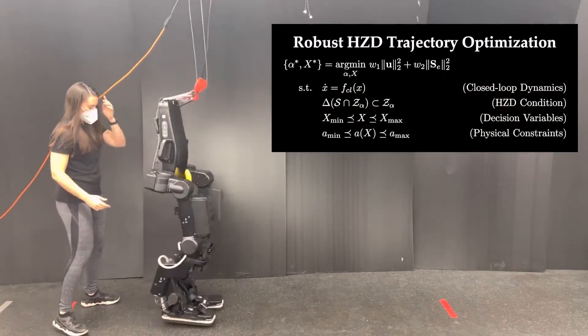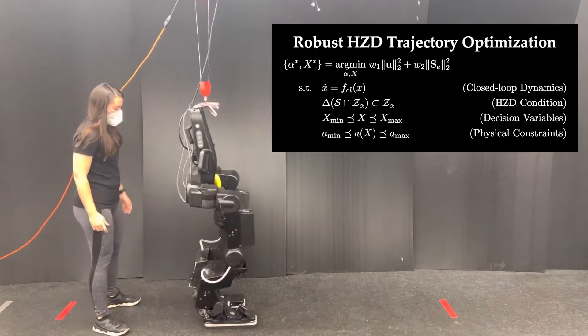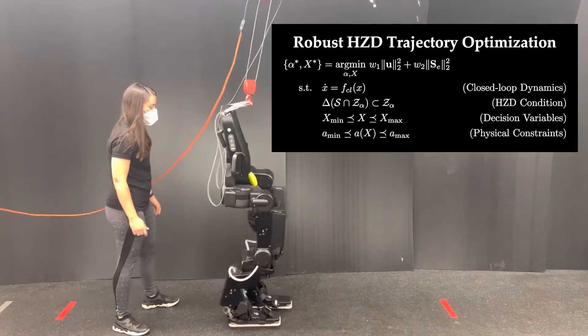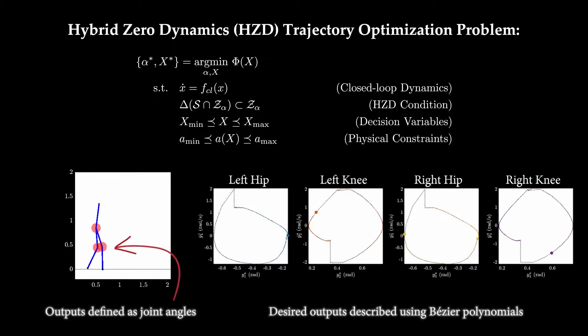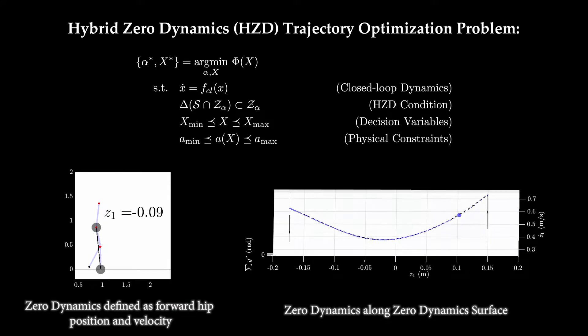In this work, we extend the hybrid zero dynamics method of gait generation to account for state and impact uncertainties. Briefly, the HZD method synthesizes reference trajectories for selected outputs, which when enforced render periodically stable zero dynamics.